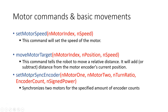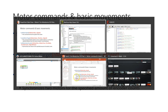The next command is called setMotorSyncEncoder. This command synchronizes two motors for a specified amount of encoder counts. It accepts five arguments: the first is motor 1, the second is motor 2, the third is your turn ratio, the fourth is your encoder count in degrees, and the fifth argument is your motor power from negative 100 to 100. This is actually similar to EV3G's move steering command, which allows you to control the movement and steering of two motors in one single command.